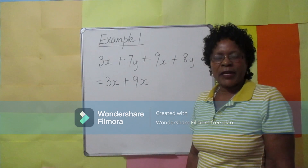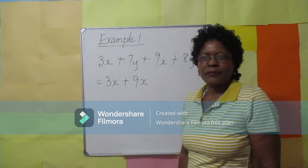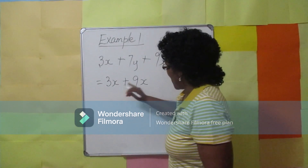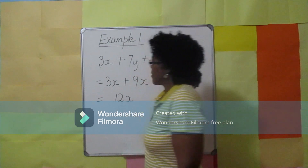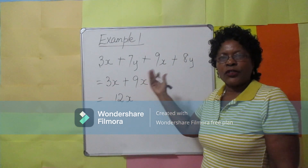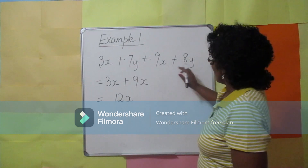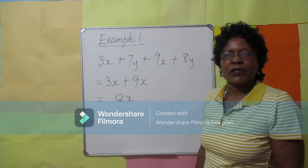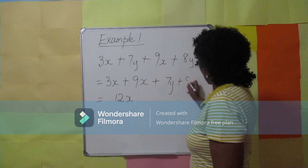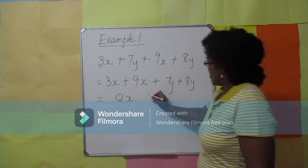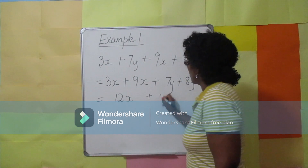They have the same variable, that is x and x. Add them together: 3x plus 9x is equal to 12x. The expression is not completed. Let's identify the second variables. 7y and 8y — they have the same variables. 7y plus 8y is equal to 15y.